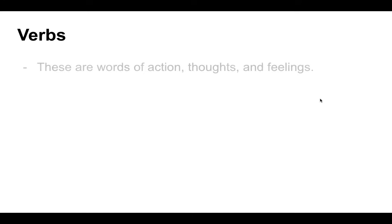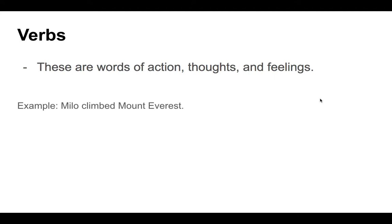Verbs are words of action, thoughts, and feelings — these are the active words within the sentence. They're one of the two most important categories of words we find in English sentences. For example, 'Milo climbed Mount Everest.' Which word there conveys action? If you said 'climbed,' you're correct.